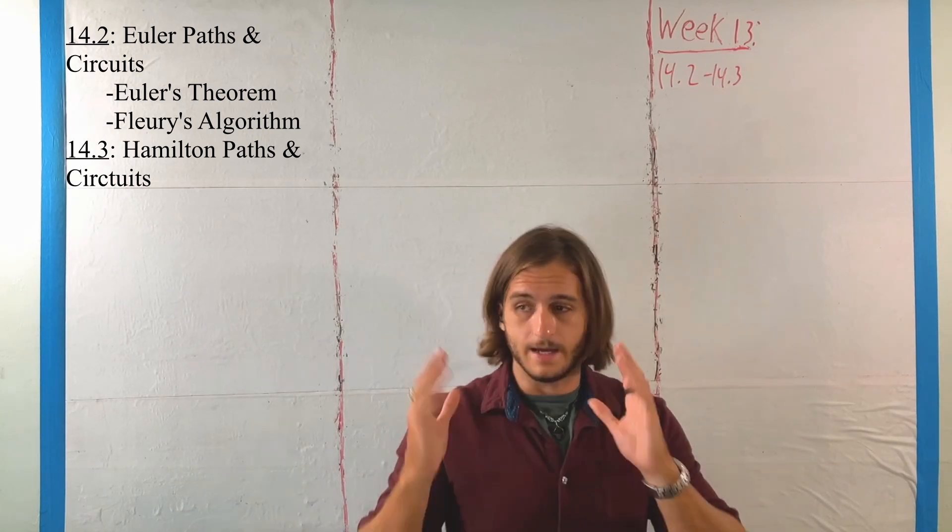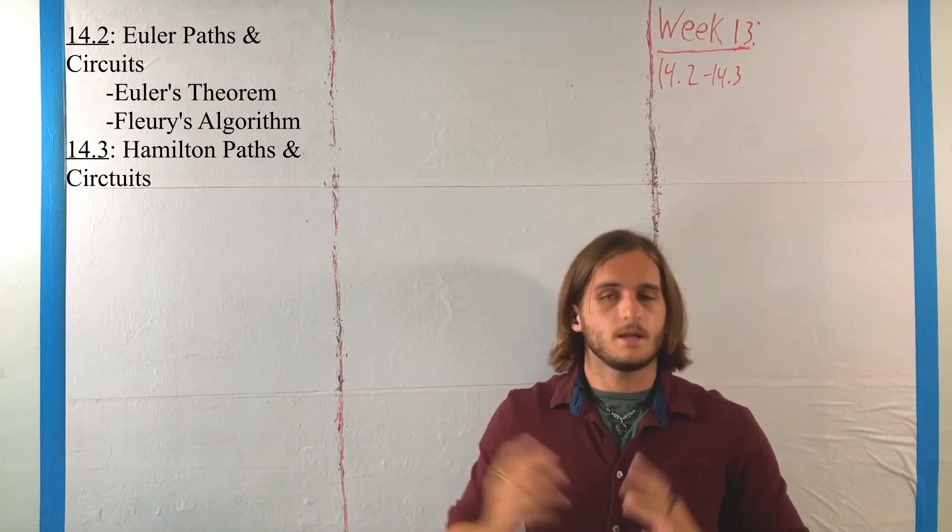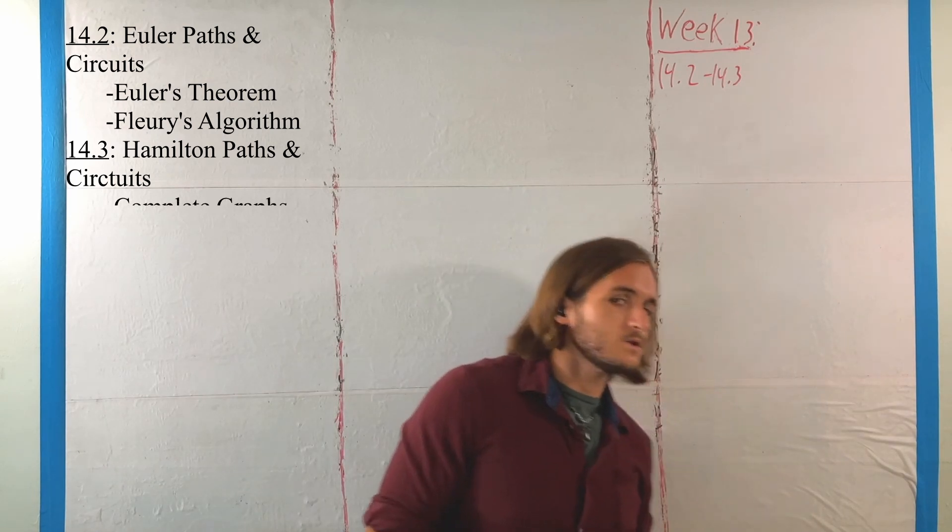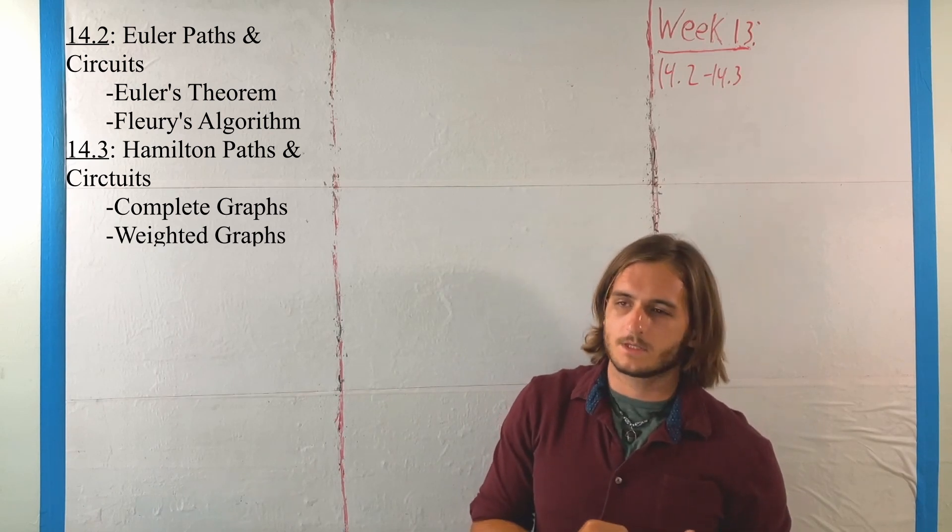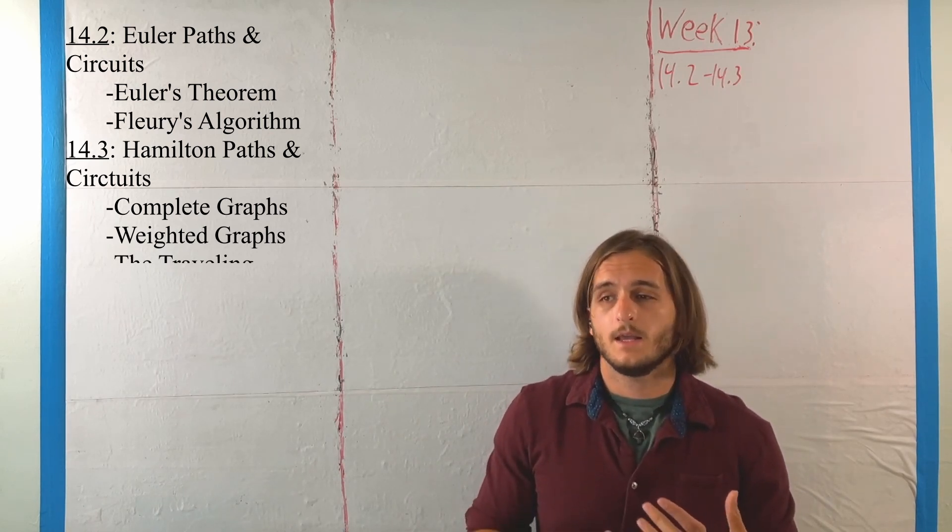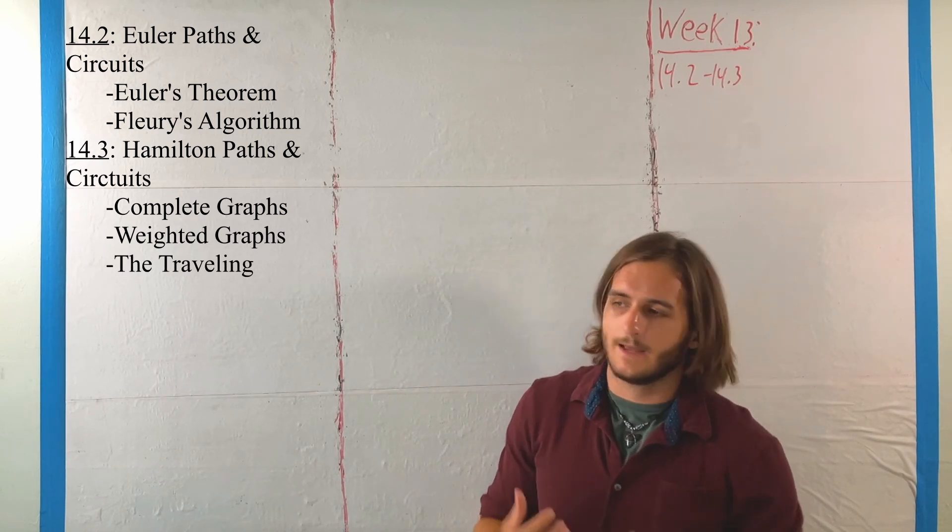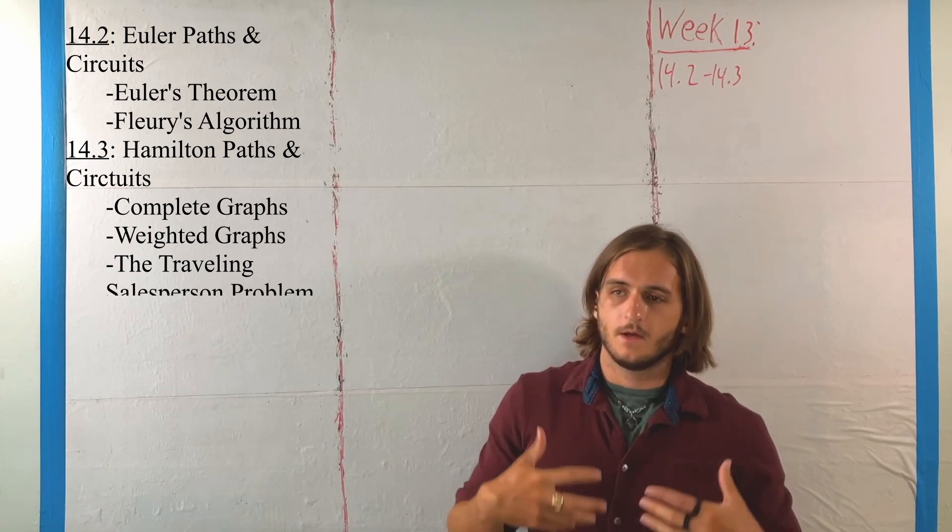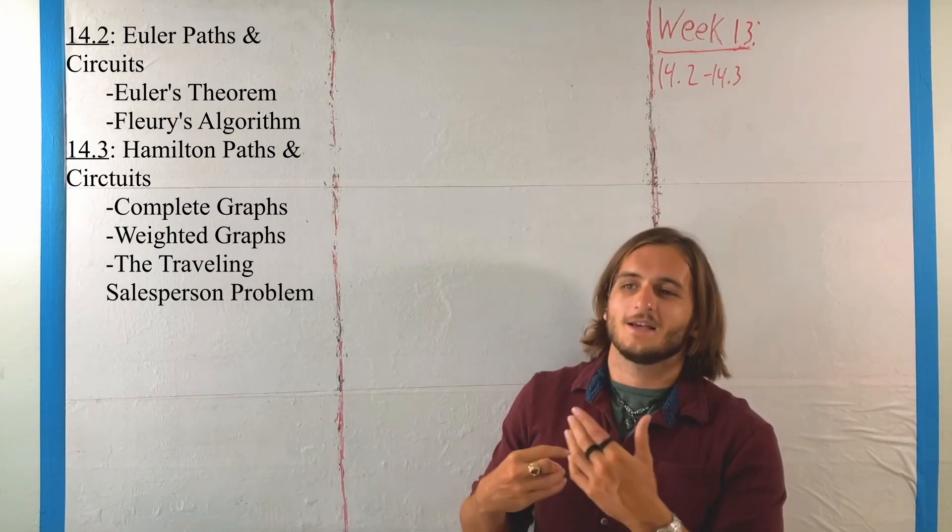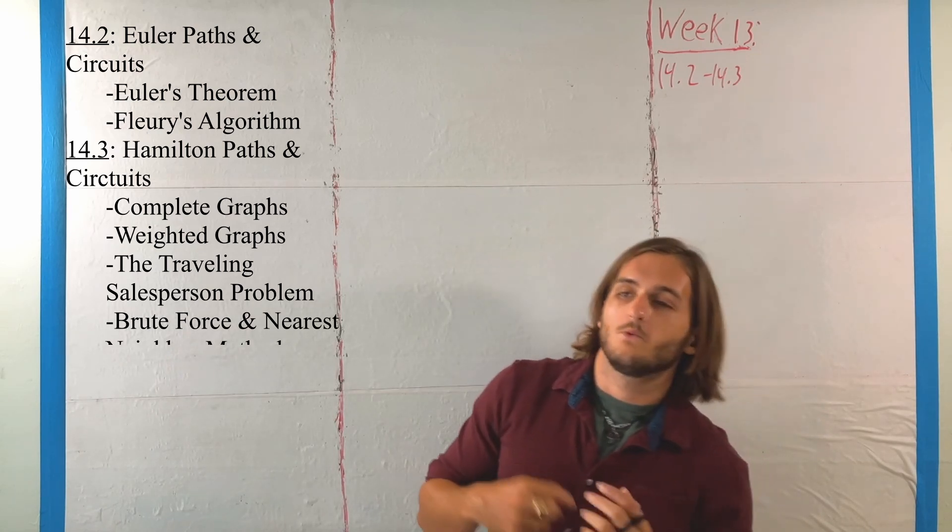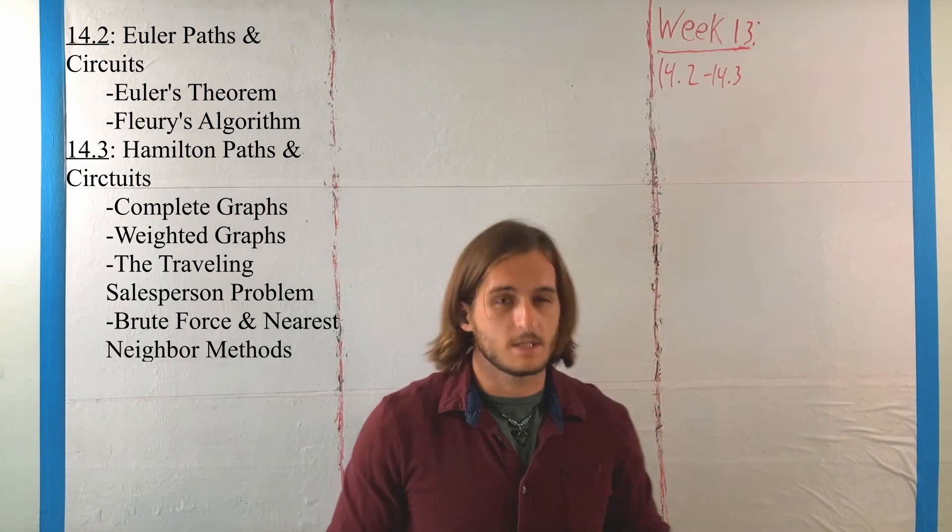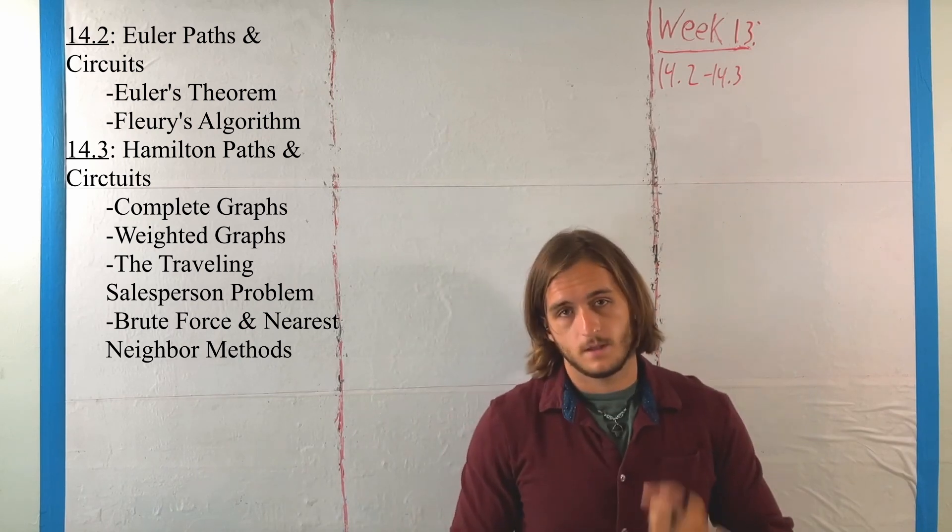We're going to identify the main idea of what they are, look at a special case in terms of complete graphs, then adjust our lens a little bit to talk about what is called a weighted graph, and how we can solve a special application of Hamilton paths and cycles to weighted graphs through what is called the traveling salesperson problem, which is done through a few different methods that we're going to see two of here.